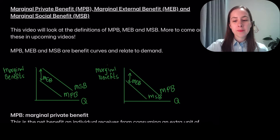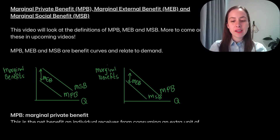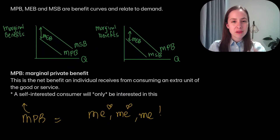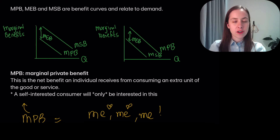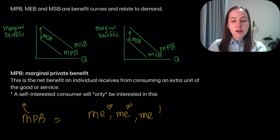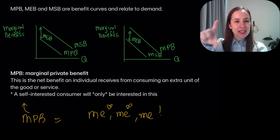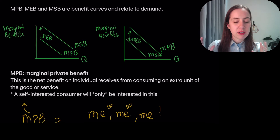First of all, this is really important: MPB, MEB, and MSB are all to do with the demand curves. Specifically, you're going to learn that we draw the MSB and we draw the MPB. The MEB is like the gap between them — I'll show you about that.